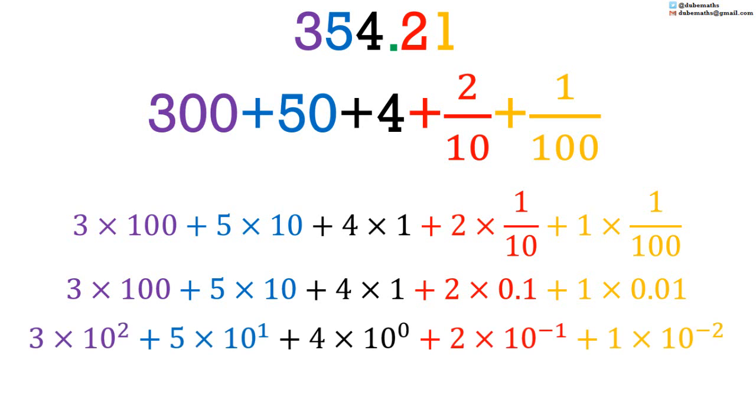The last way it may be written is using powers of 10. I will discuss indices in a later video. 10 squared is the same as 100. 10 to the first power is the same as 10. 10 to the zero power is the same as 1. 10 to the minus 1 power is the same as 1 tenth or 0.1. And 10 to the minus 2 power is the same as 1 hundredth or 0.01.